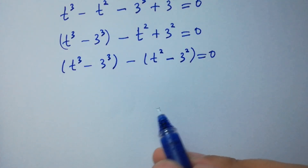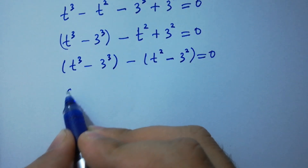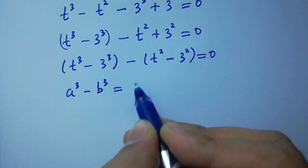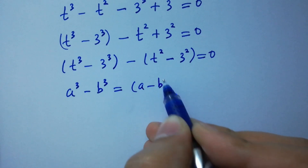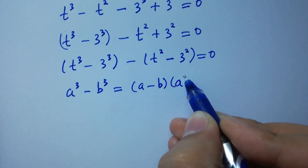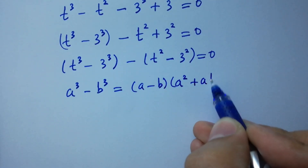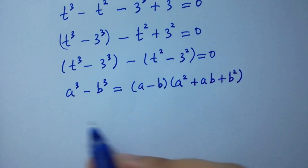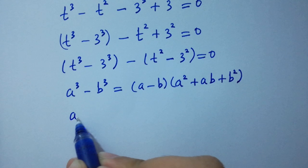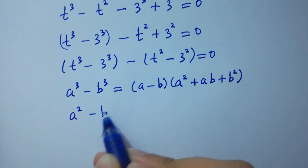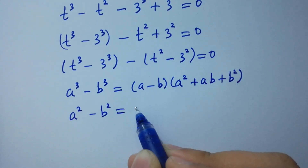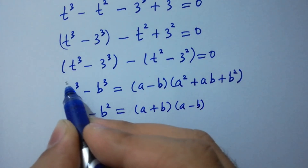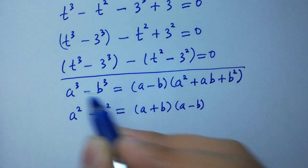As we know, a cubed minus b cubed equals (a minus b)(a squared plus ab plus b squared), and a squared minus b squared equals (a plus b)(a minus b).